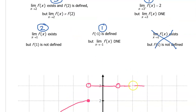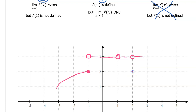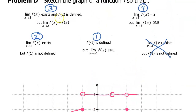If I want the limit to be different from the value of the function at 2, I need to make this an open circle and put a closed circle somewhere else — say here. The closed circle represents the value of f at 2. Specifically, the limit as x approaches 2 is 3, but the value of the function at 2 is 2. So we have two different things, and the third condition is satisfied.